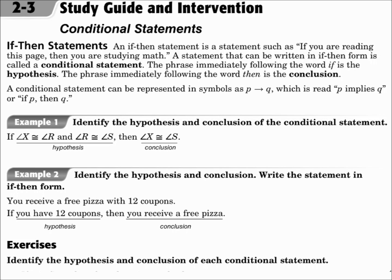If-then statements: an if-then statement is a statement such as 'if you are reading this page, then you are studying math.' A statement that can be written in if-then form is called a conditional statement. The phrase immediately following the word 'if' is the hypothesis, and the phrase immediately following the word 'then' is the conclusion. A conditional statement can be represented in symbols as P to Q, which is read 'P implies Q,' or 'if P, then Q.'